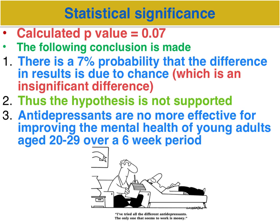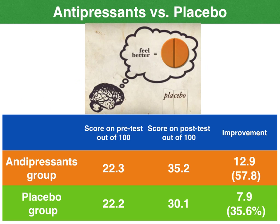So, in this hypothetical, let's say we come up with a James Bond figure — 0.07. We need to make the following statements: there is a 7% chance that the difference between the results is due to chance factors. This is an insignificant result. Thus, we are not supporting our hypothesis in this case. Therefore, we conclude that antidepressants are no more effective in improving the mental health of young adults aged 20 to 29 over a six-week span. That's how you deal with an insignificant result.